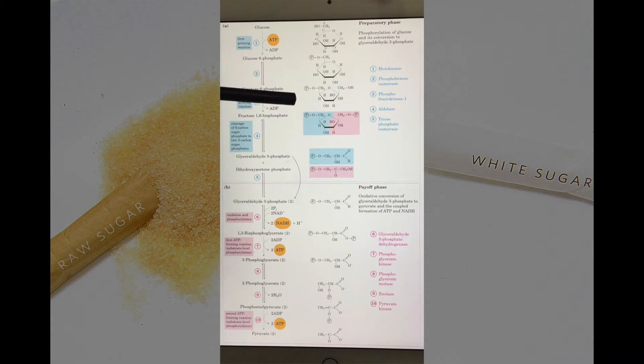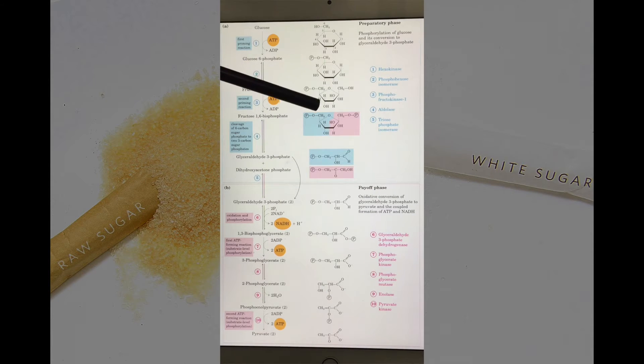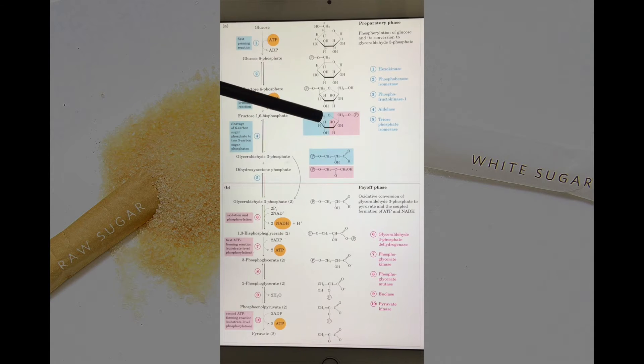In preparatory phase, the energy molecule that is ATP is invested. As you can see over here, the glucose being converted into fructose 1,6-bisphosphate, and the ATP, the energy invested over here, will be utilized to break this molecule into two.